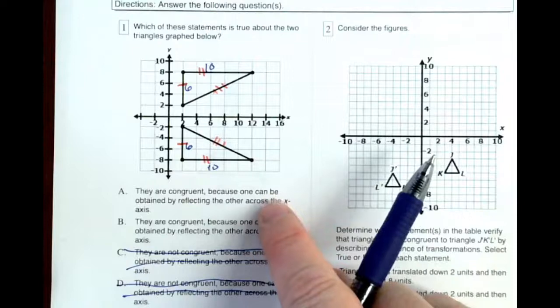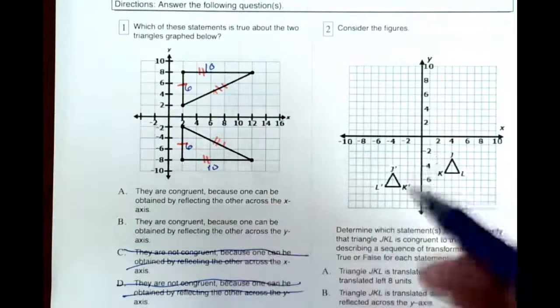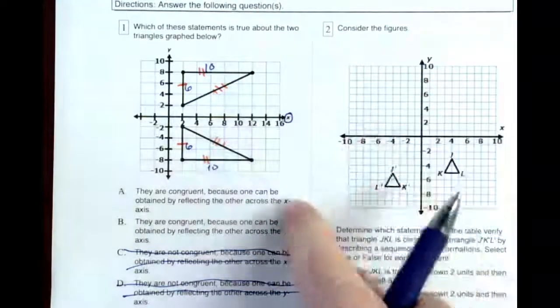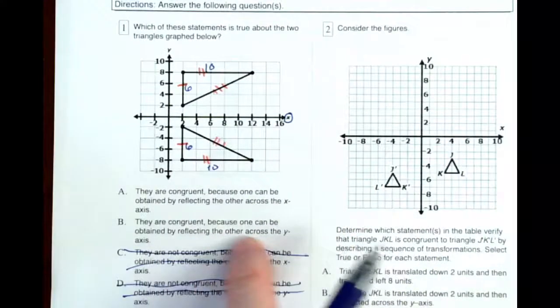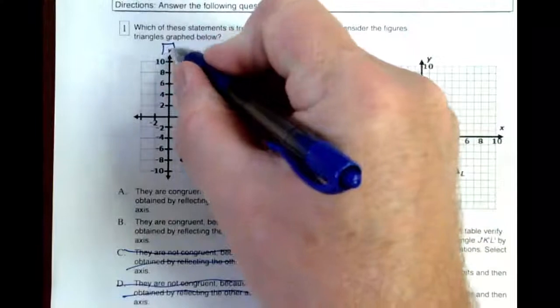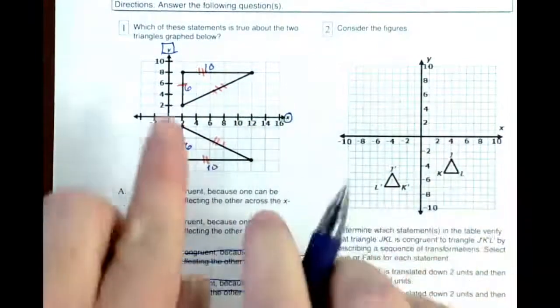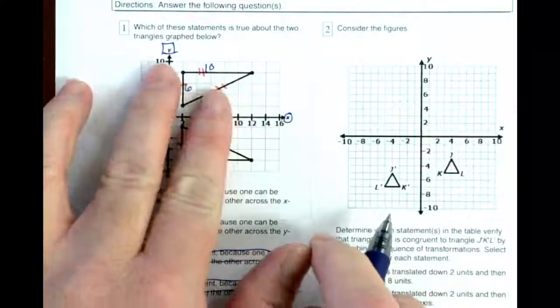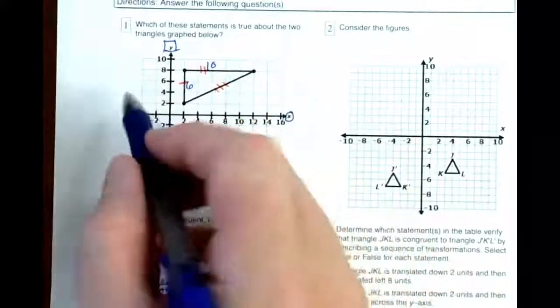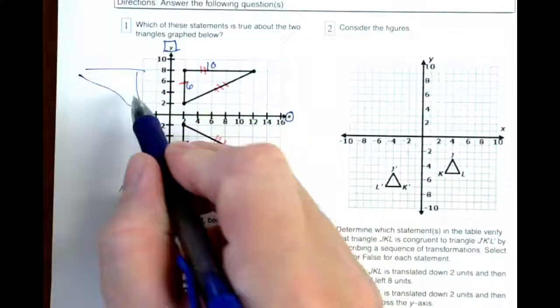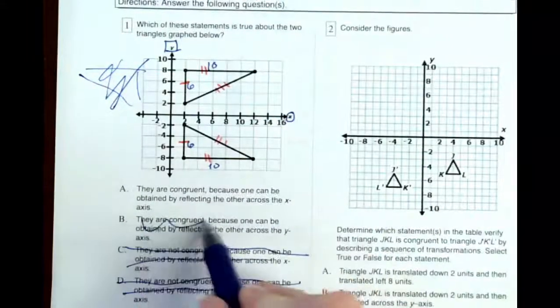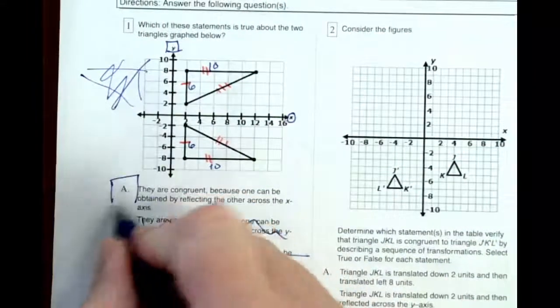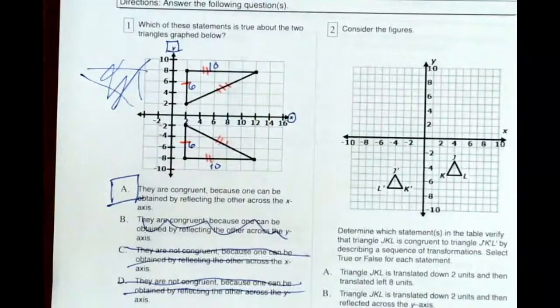Because one says one can be obtained by reflecting across the x-axis. Well, here's the x-axis right here. And here's the other one says you can obtain it by reflecting across the y-axis. So here's the y-axis here. Now if I reflected this object over the y-axis, I'd end up over here somewhere. And that's obviously not the case. So we're going to get rid of the one with the y-axis. And by default, there's only one answer that makes sense.